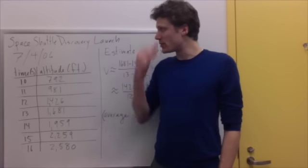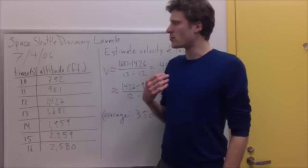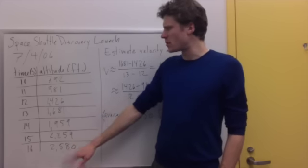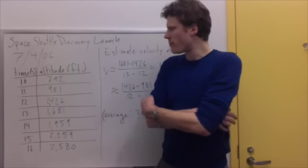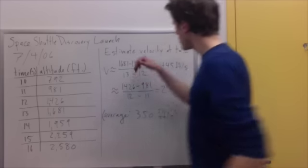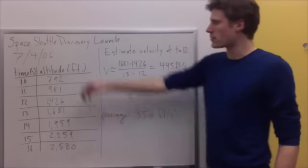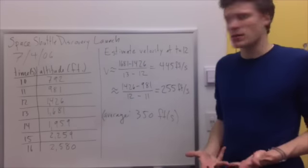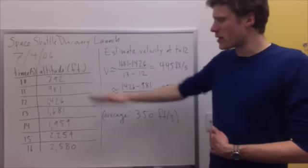Sticking with the space theme, I've taken some data from the Space Shuttle Discovery launch. This was from July 4th, 2006. And I have some data, just a short data table for its altitude t seconds after liftoff. Great, there's the data. It's pretty self-explanatory. Let's say we wanted to estimate the velocity at time t equals 12. Well, we're giving feet in seconds, so we're going to get the velocity in feet per second. Well, to get the instantaneous velocity, I can't really get it from a discrete table like this. I've only got discrete measurements.